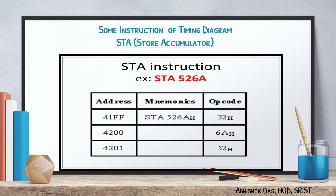Here are some instructions about the timing diagram. We consider STA 526A. STA is a 3-byte instruction. The address of the mnemonic is 41FF. The opcode of STA is 32. The next address is 4200, and the lower address byte 6A is placed at address 4200. The upper address byte 52 is placed in the next location 4201.